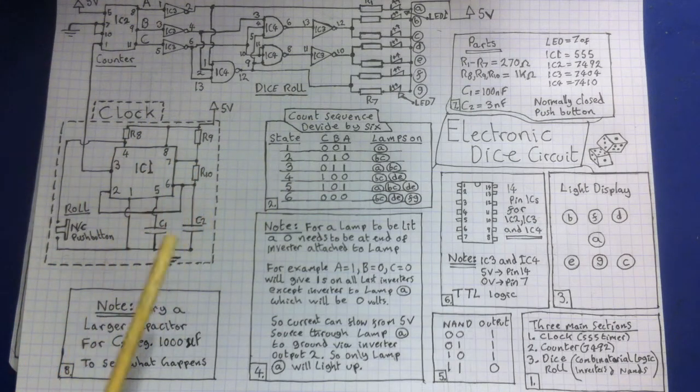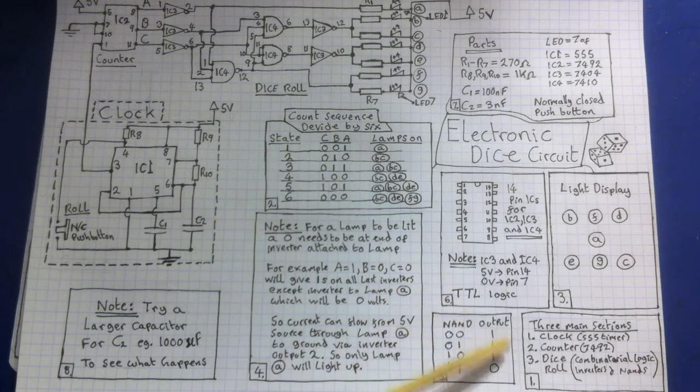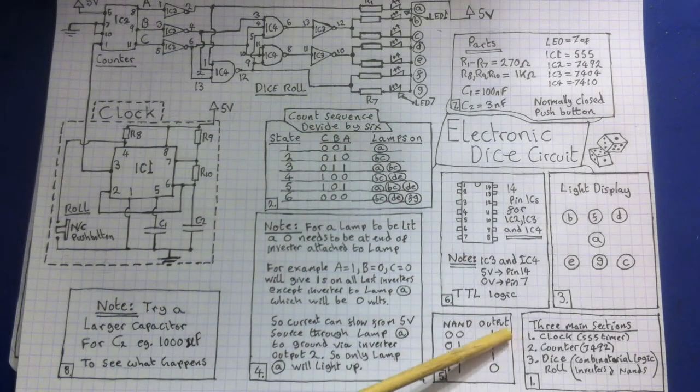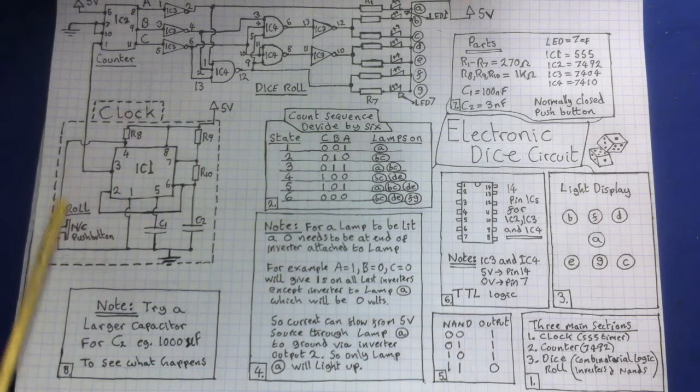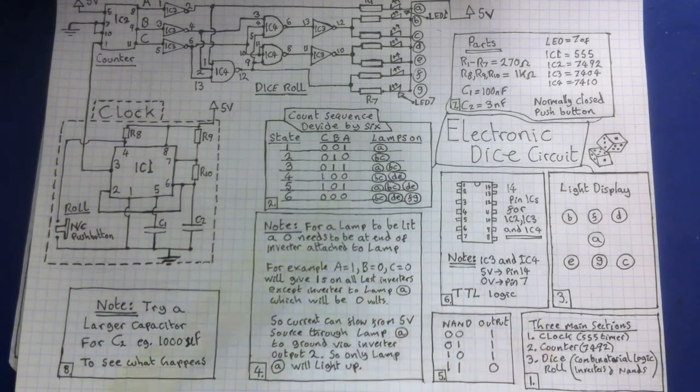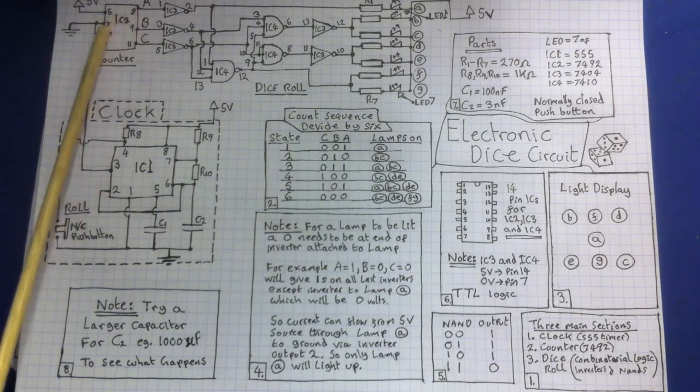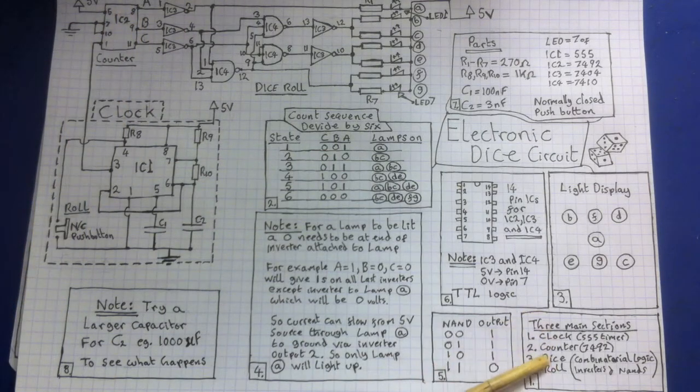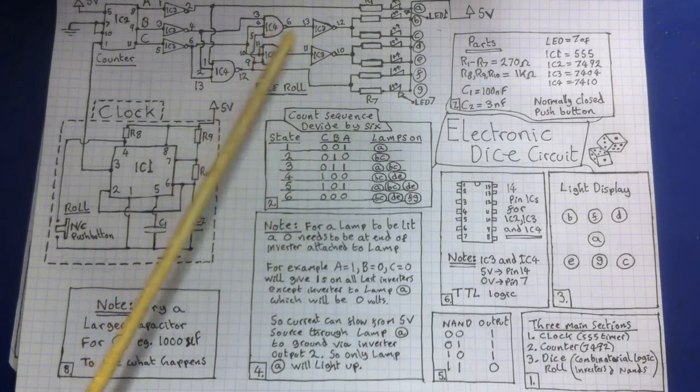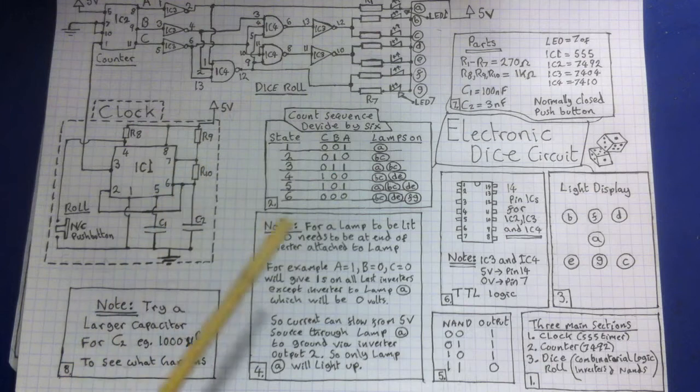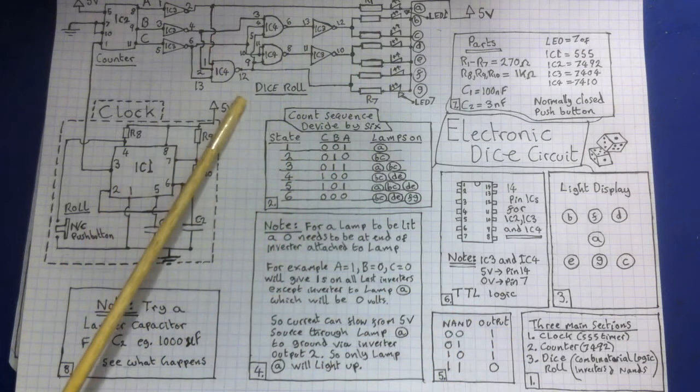If we start with box one, I've numbered them to make it easier for me to explain this. The three main sections we're going to talk about are the clock, which consists of a 555 timer, that's this section here. Then we're going to briefly talk about the counter and what that does. And then I'll talk about the combinatorial logic built up from NAND gates and inverters and just quickly go through that and explain how that works.